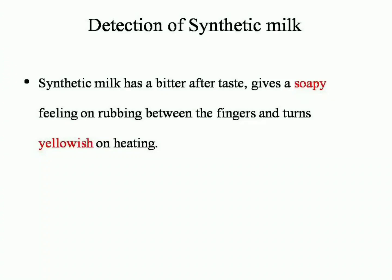Synthetic or artificial milk: when rubbed between the fingers it feels soapy, and turns yellowish on heating. In the Arianeid test, addition of a little milk shows a soapy appearance and yellowish color — these indicate adulteration.